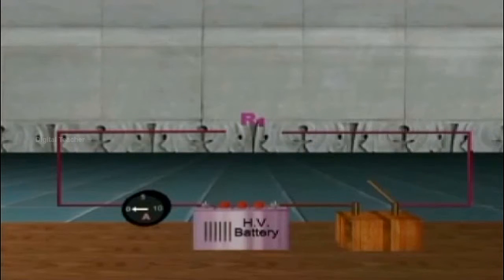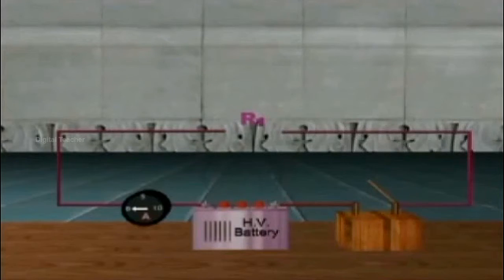Connect the resistor R1 along the gap PQ. Press the tap key and note the current reading in ammeter.